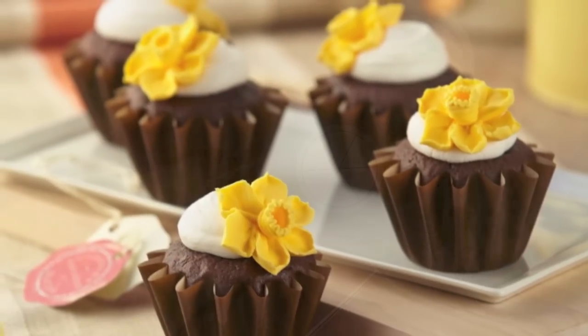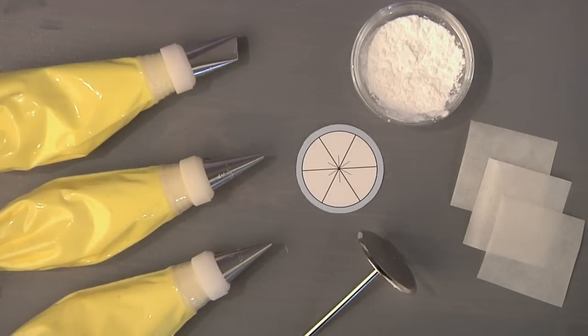For this project, you will need medium consistency icing tinted with lemon yellow icing color. You will also need a tip 104, tip 3,